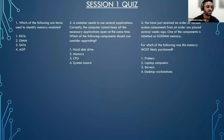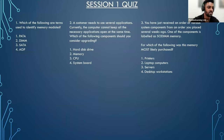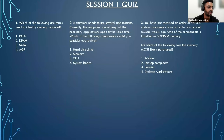Lastly, number three: you have received an order of system components and one is labeled as SODIMM memory. For which of the following was this memory most likely purchased? If you chose option number two — laptop computers — that would be correct. SODIMM is a compact form factor of DIMM typically used in smaller computers such as laptops.